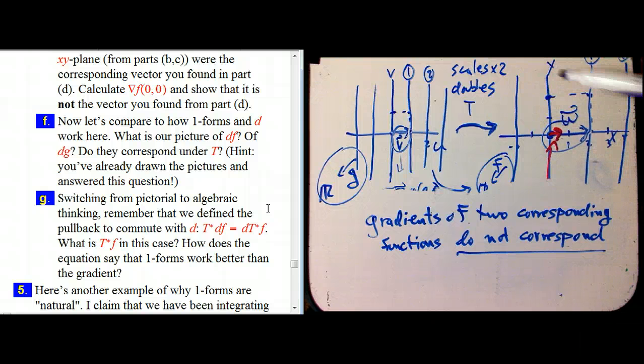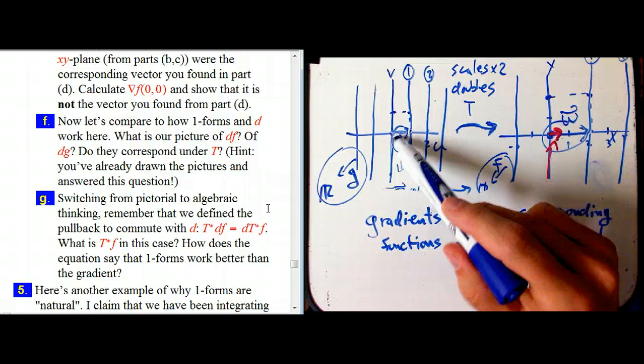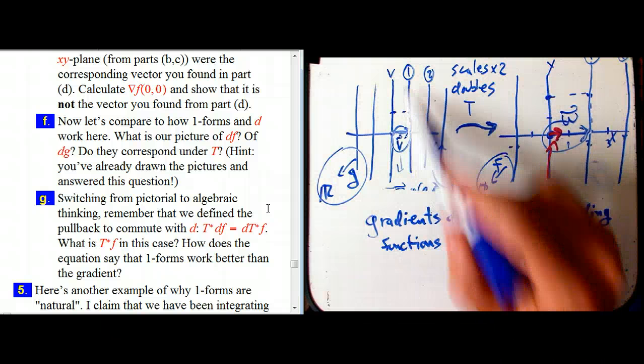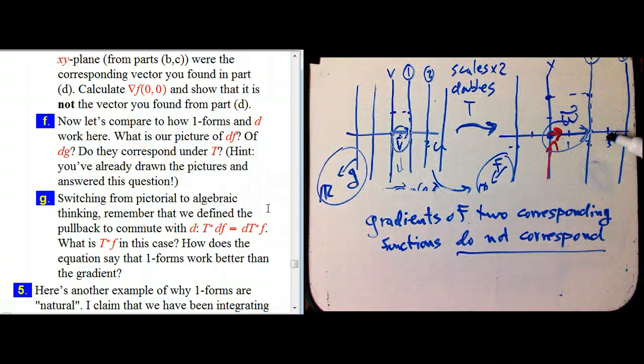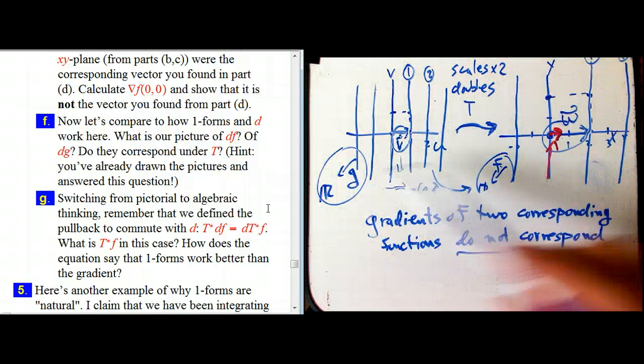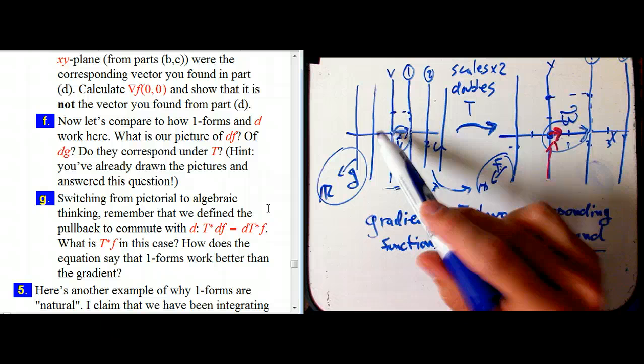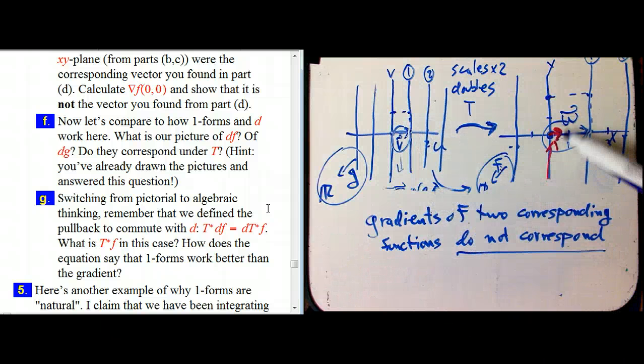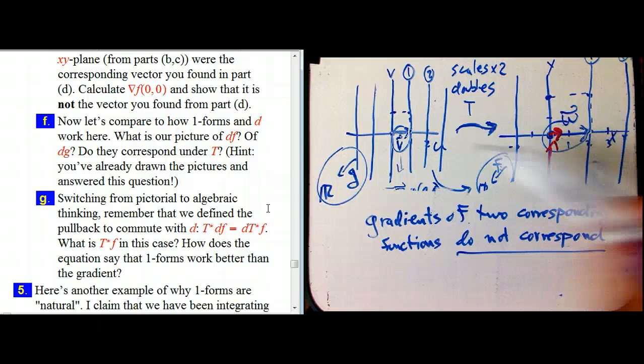And of course they correspond under t. That was the very first thing we did is the reason we actually drew these to be the way they are is that we just pushed them forward by t. We just took all these sets and just saw where they went to under t. And then we created the function f out of that and everything. But the level sets are more intimately tied to the functions f and g and the fact that they correspond under the change of variables than these funky arrows are that we are supposedly supposed to do for the gradient.